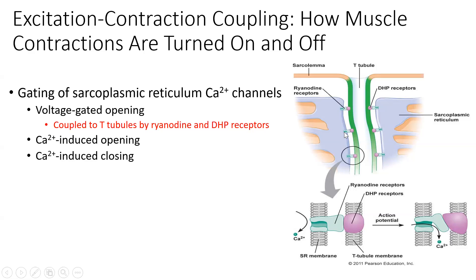Calcium needs to move from the SR — shown here in blue — out into the cytosol, shown in white, in order to come in contact with actin and expose those binding sites. The two receptors found in this membrane control the opening of this channel, which allows calcium to flood the cytosol.